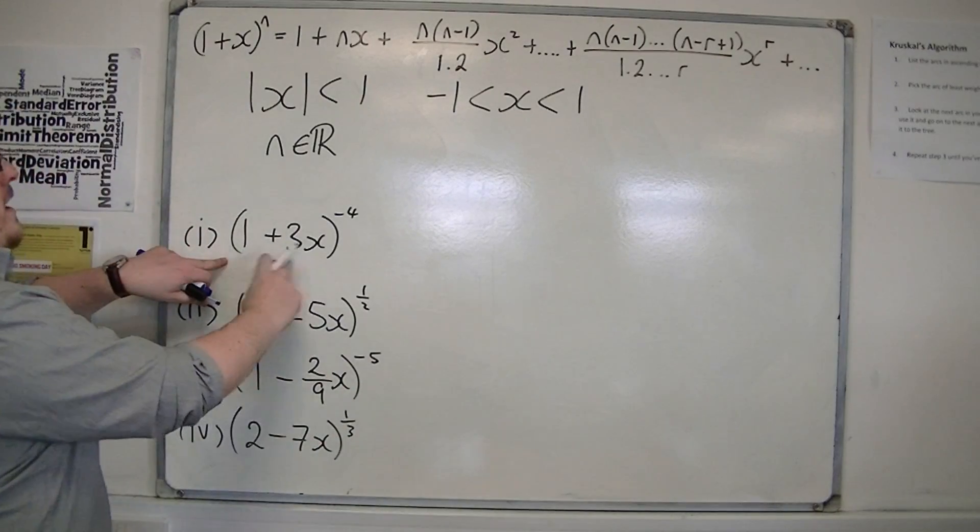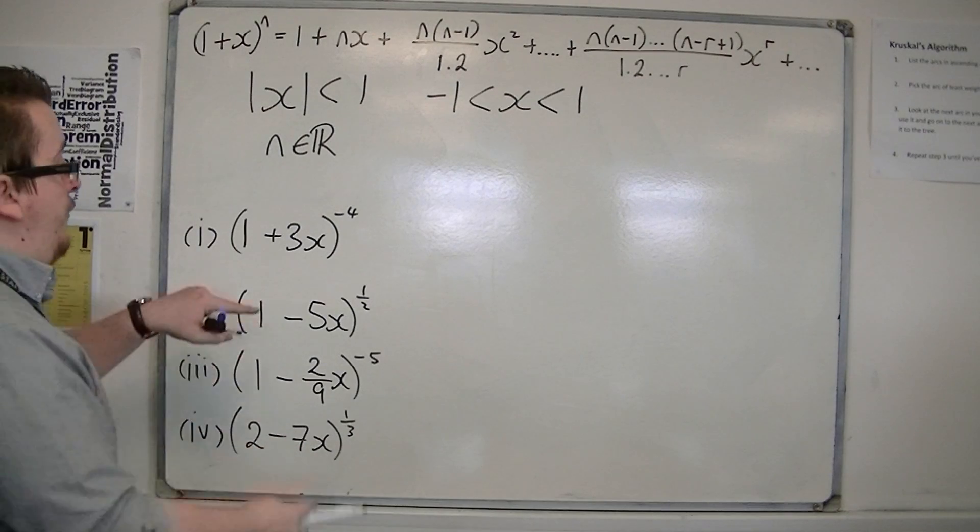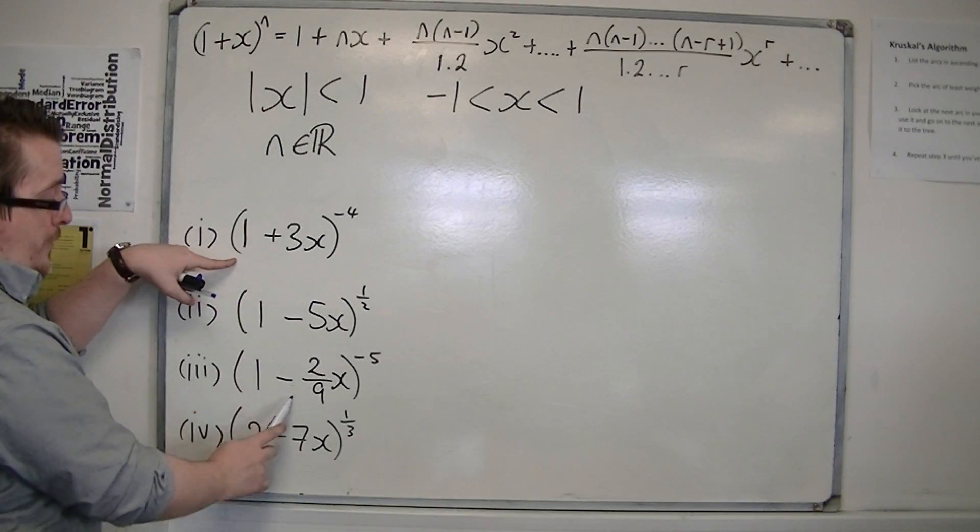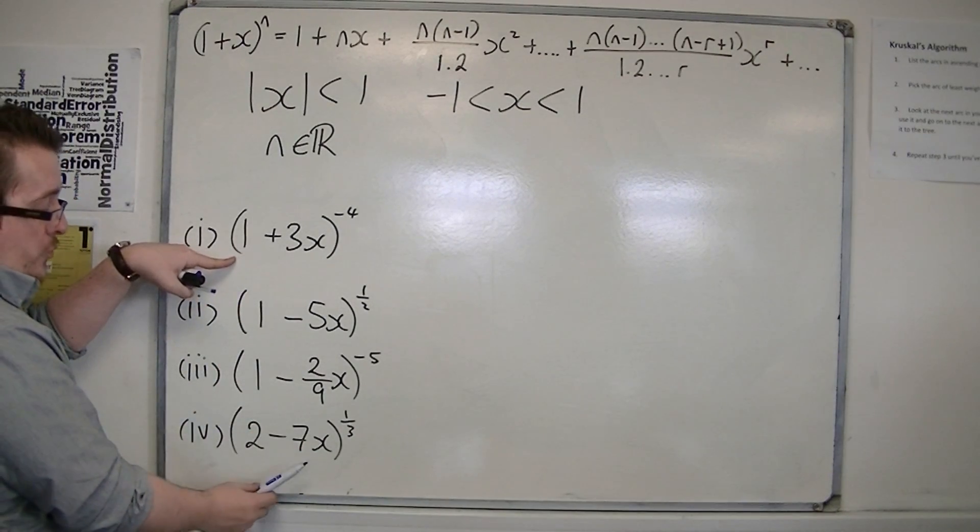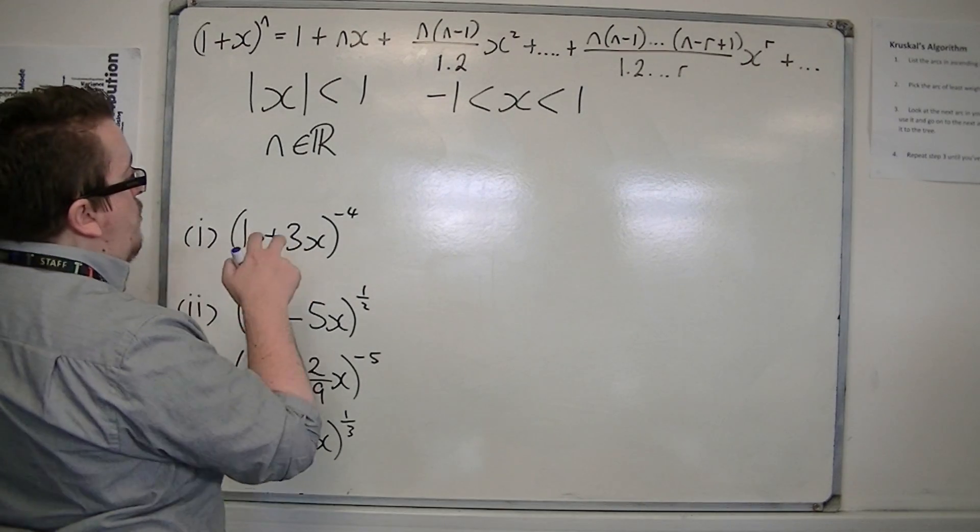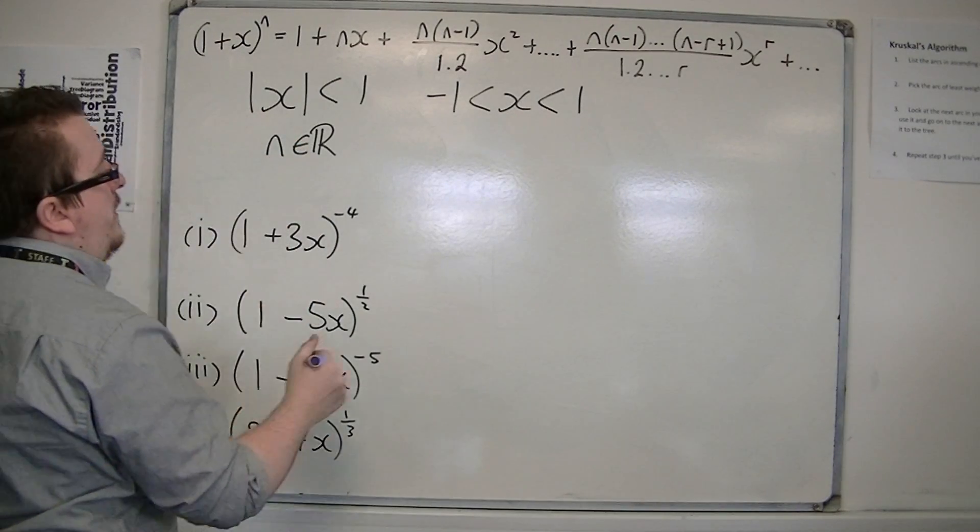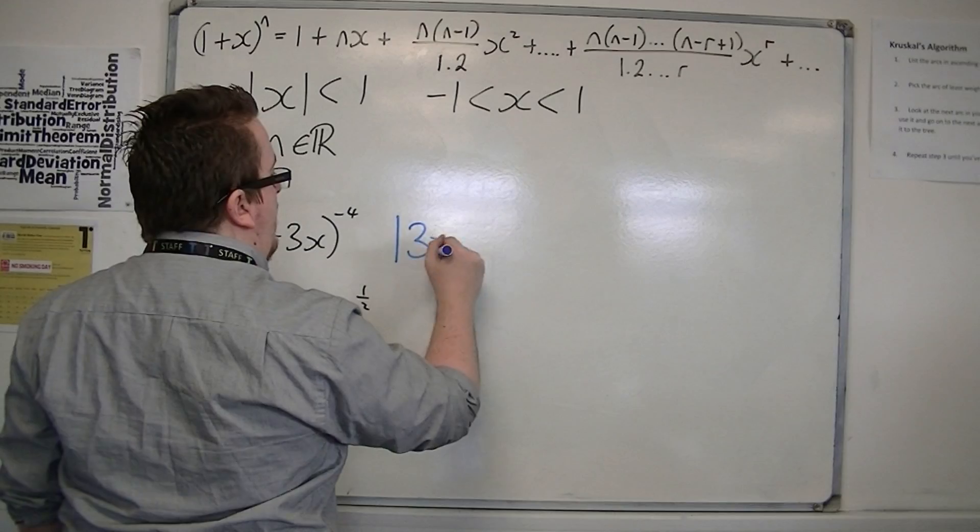If you're looking at 1 plus 3x to the minus 4, I need to make sure I've got 1 plus or 1 minus first, which I have. Something strange is going to happen for this last one. You just replace what you have there, that plus 3x, with that x that I have there. So, I've got 3x.